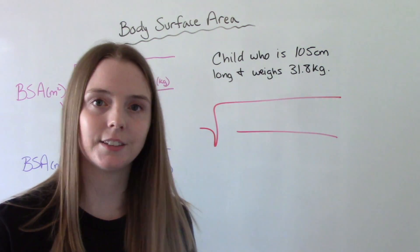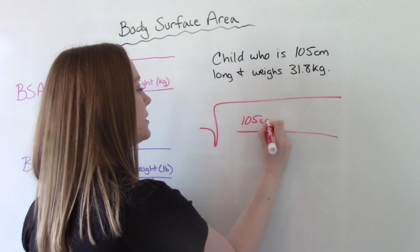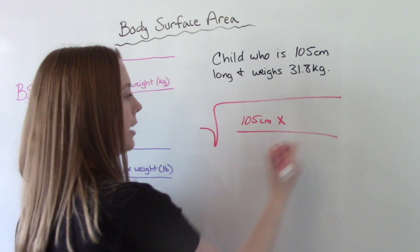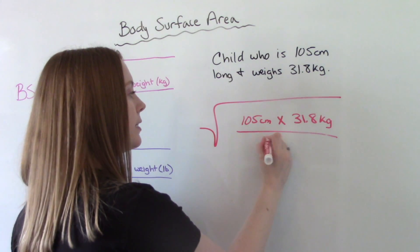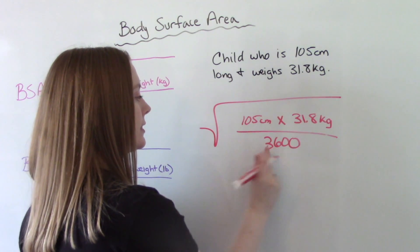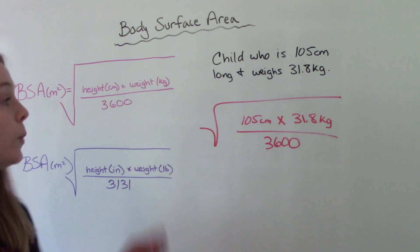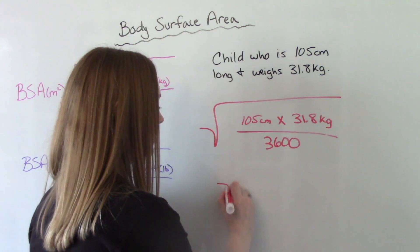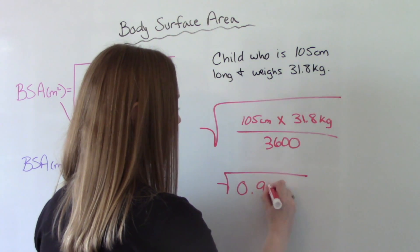And we have to plug our stuff in here. So we have 105 centimeters times 31.8 kilograms divided by 3,600. Right? Because that number never changes.